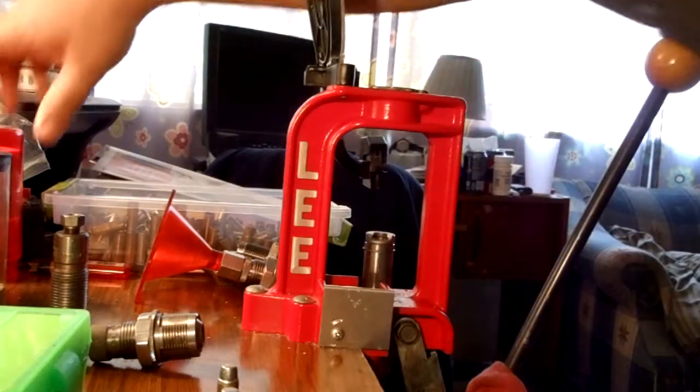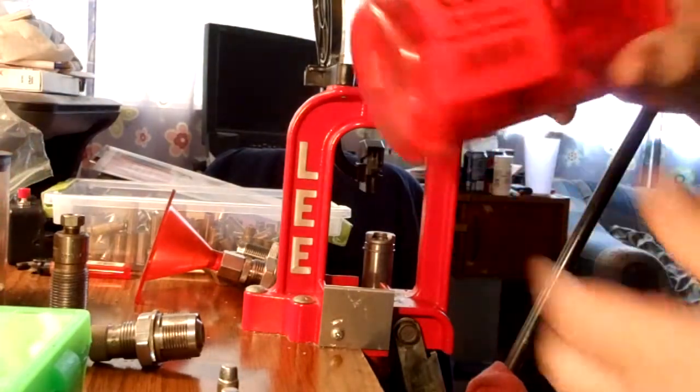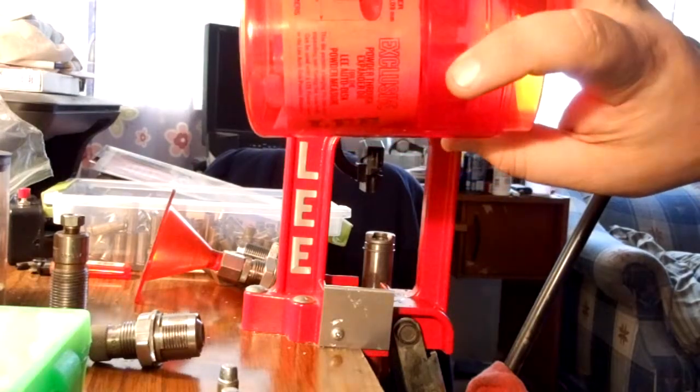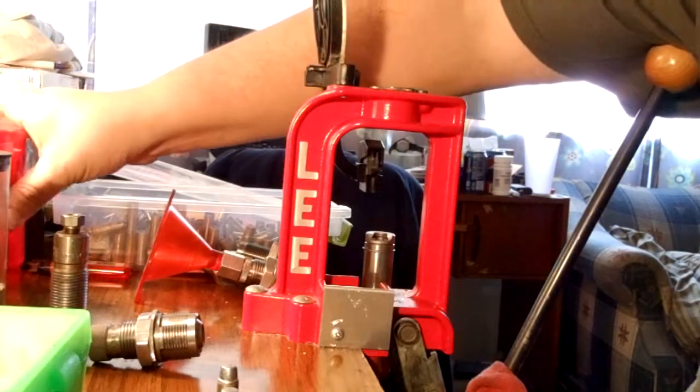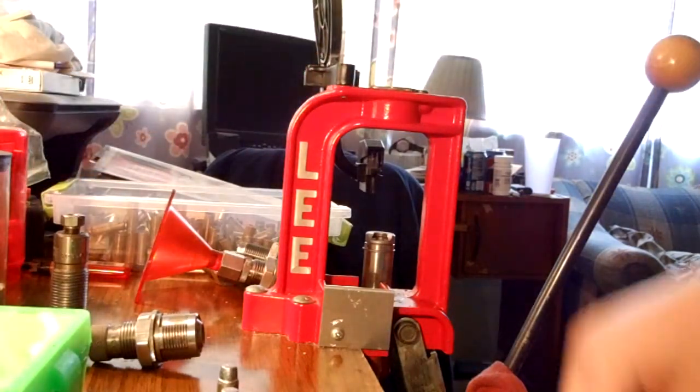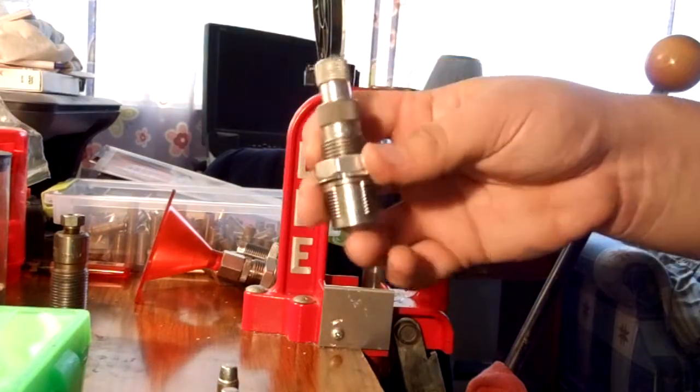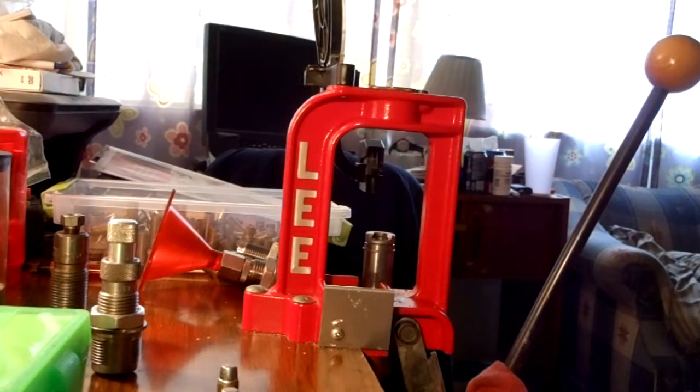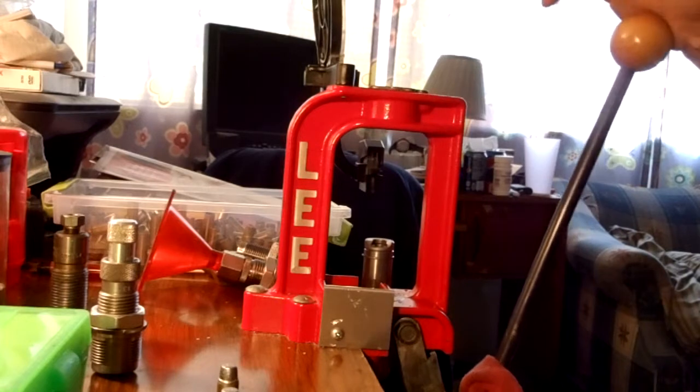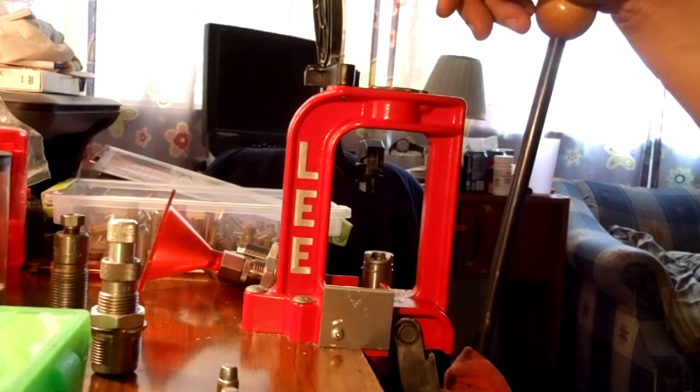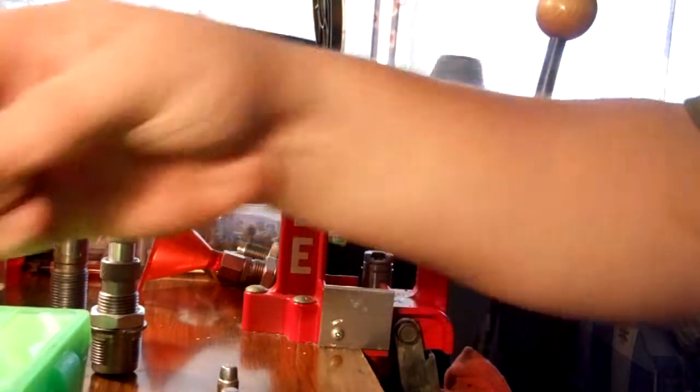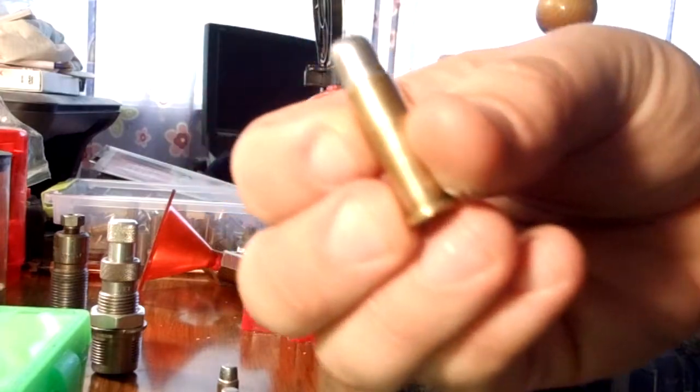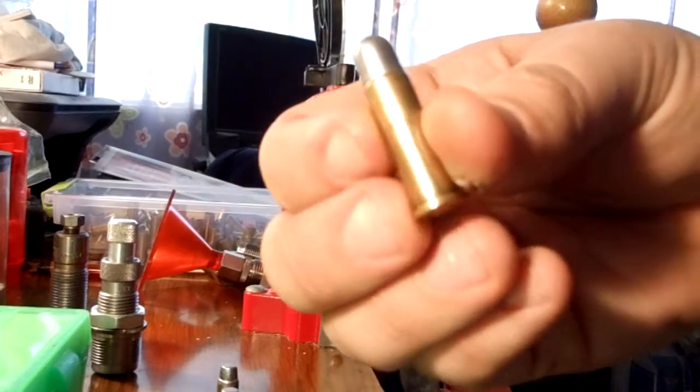But one die set that I really recommend is the Lee Carbide. I got this set here for $32.50 in a local gun shop. And they're really nice because you don't have to lube the bullet. And the roll crimper is built into the seater in this. And which I mean, you really need a roll crimp on a 38 special just so the powder properly ignites. And you get more consistent velocities and stuff like that with a roll crimp. I believe you guys can see that on this big 200 grainer.